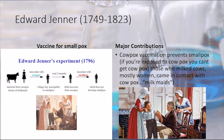In 1796 he carried out his famous experiment on eight-year-old James Phipps. Jenner inserted pus taken from a cowpox pustule into an incision on the boy's arm. He was testing his theory drawn from the folklore of the countryside that milkmaids who suffered the mild disease of cowpox never contracted smallpox — one of the greatest killers of the period, particularly among children. Jenner subsequently proved that, having been inoculated with cowpox, Phipps was immune to smallpox.